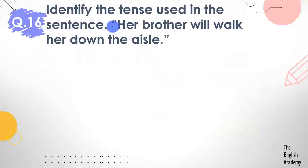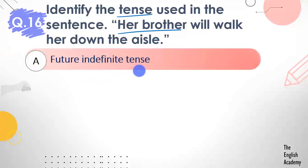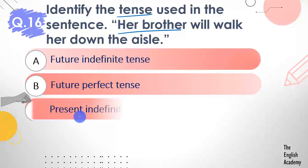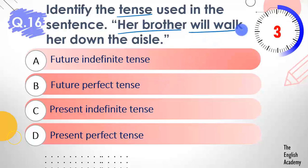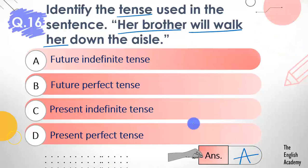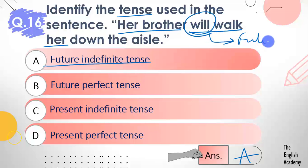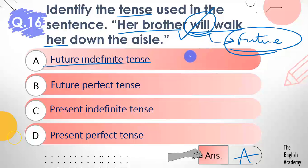Question number 16: Identify the tense used in this sentence — Her brother will walk her down the aisle. Options: A) future indefinite tense, B) future perfect tense, C) present indefinite tense, D) present perfect tense. The answer is option A — future indefinite tense. 'Will' tells us it is future-related, as we use 'will' and 'shall' in future tenses. 'Will walk' is simple future or future indefinite tense.